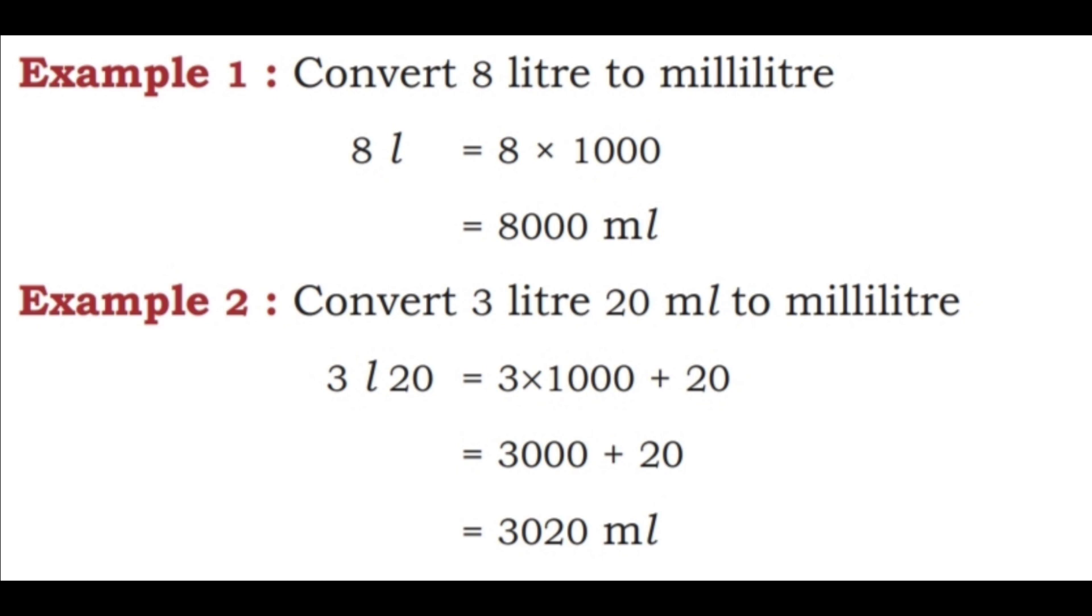Example 2. Convert 3 liter 20 ml to milliliter. 3 liter 20 equals 3 into 1000 plus 20. 3 into 1000 is 3000 plus 20, that is equal to 3020 ml.